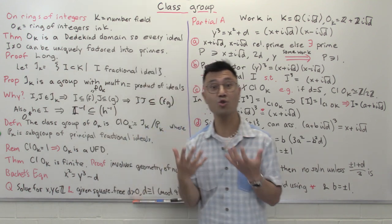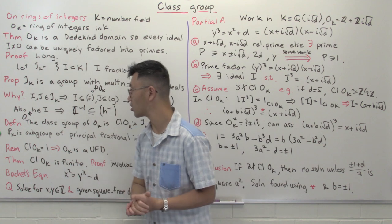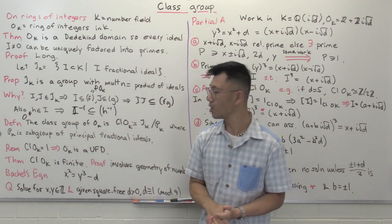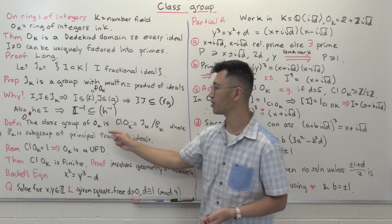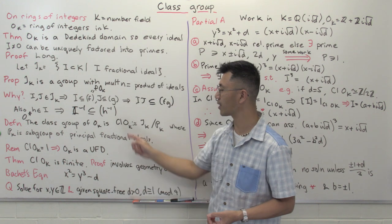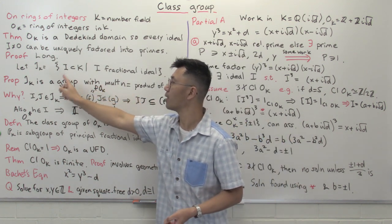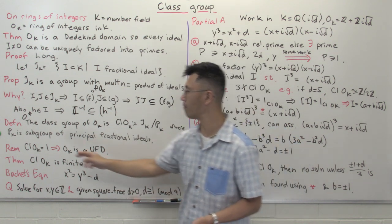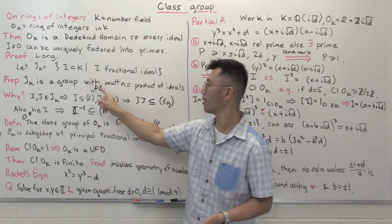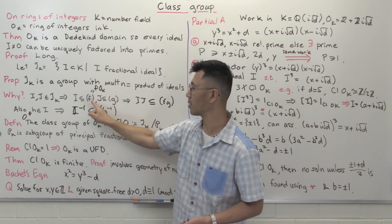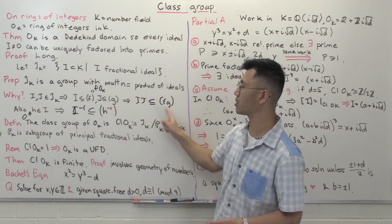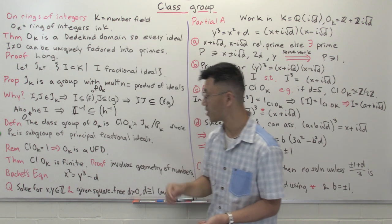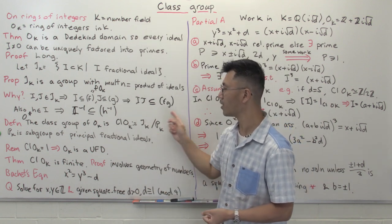We have a group structure, and we're going to use this to understand the arithmetic of this ring of integers. Now we come to the main definition: the class group. The class group of Ok is defined by taking this group of fractional ideals with the product of ideals as multiplication, and factoring out by the subgroup of principal fractional ideals — things like the fractional ideal generated by some element h. This is a subgroup because the product of two principal fractional ideals is still principal, and the inverse of the fractional ideal generated by h is just the fractional ideal generated by h-inverse.